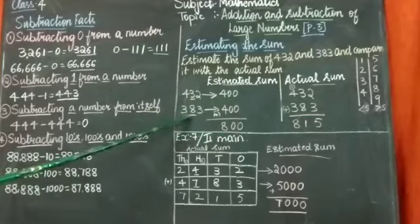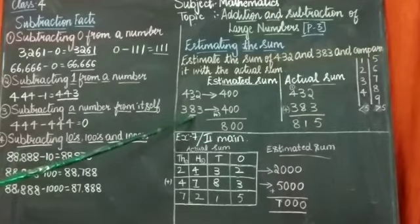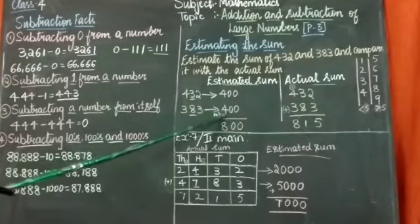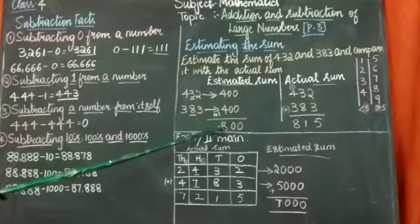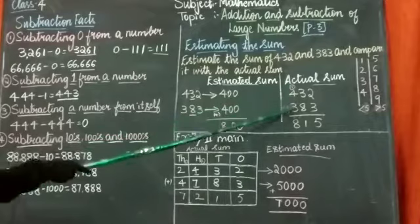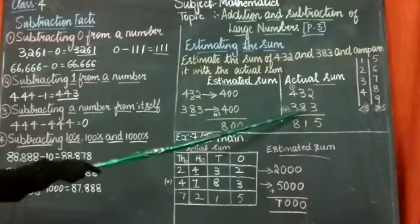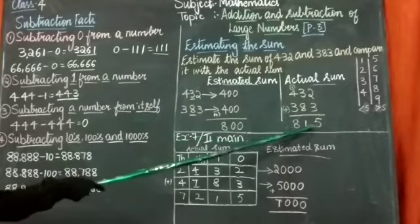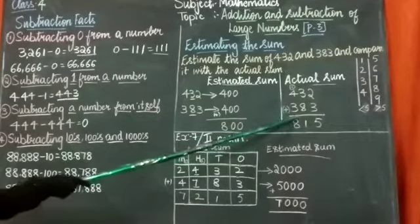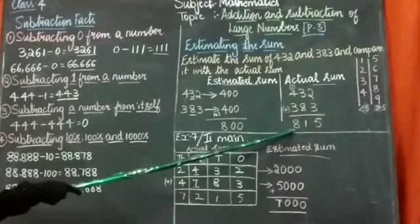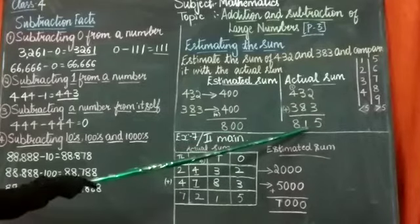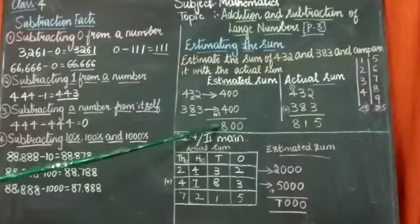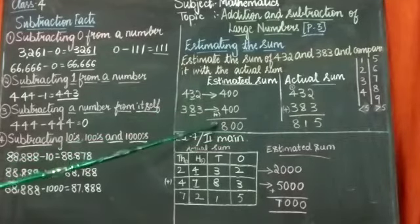Next number is 383. Consider the tens place. 8 is greater than 5, so plus 1 I will add here. That will become 400 again. The estimated sum is 800. But the actual sum what we are getting is 432 plus 383 gives you 815. This 815 also if I estimate or if I round off to hundreds place, I will just consider the tens place. 1 is there in tens place. 1 is lesser than 5, so I will be just estimating to 800. Did you get the difference between estimated sum and actual sum?